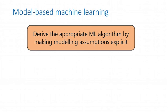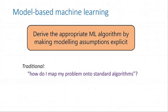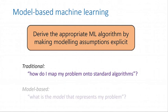The idea of model-based machine learning is to be very explicit about this. Instead of searching this huge space of algorithms, or picking ones at random, or ones you're familiar with, or ones you happen to have software implementations of, we're actually going to derive the appropriate machine learning algorithm by first making explicit the modeling assumptions. The traditional view says: how do I shoehorn my problem into some standard algorithm? But in the model-based view, we ask: what is the appropriate algorithm — what are the assumptions — for my particular application?